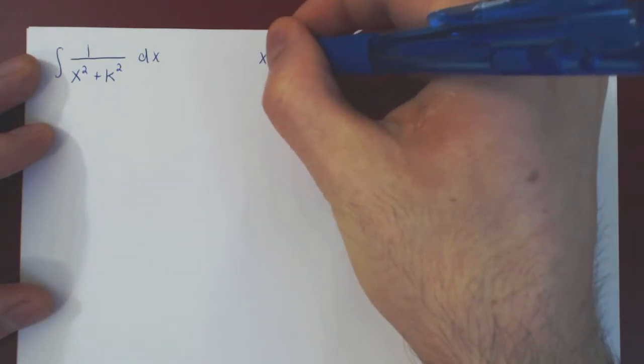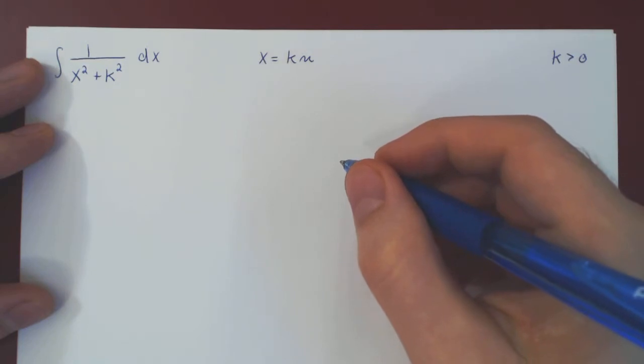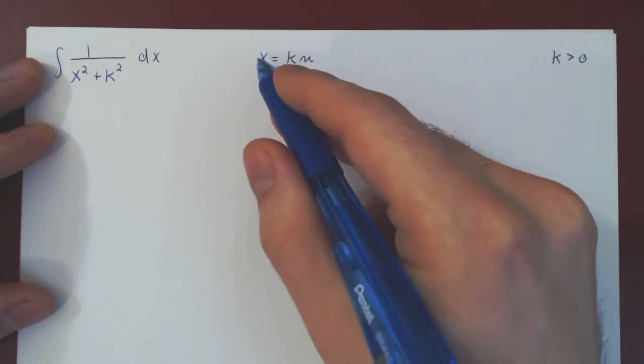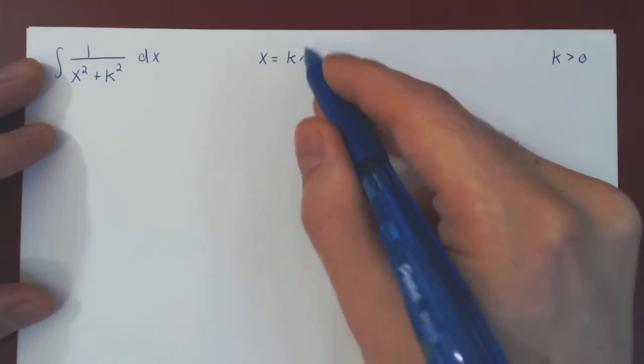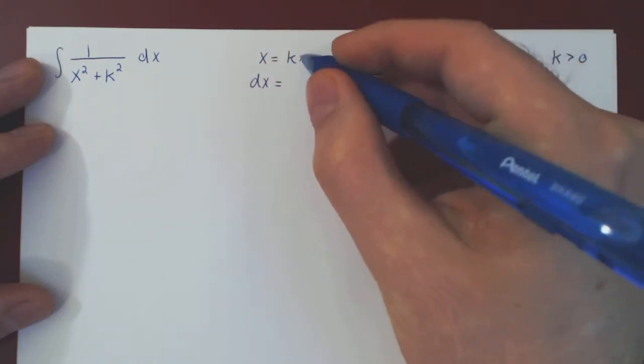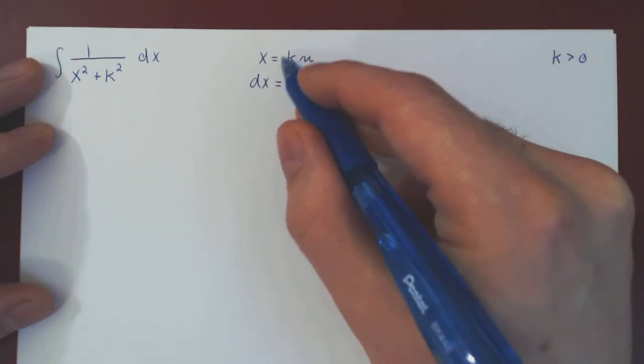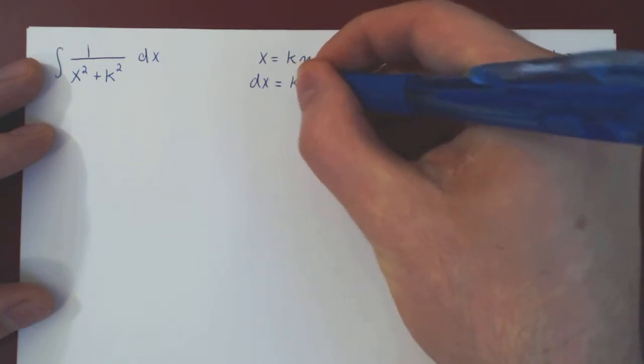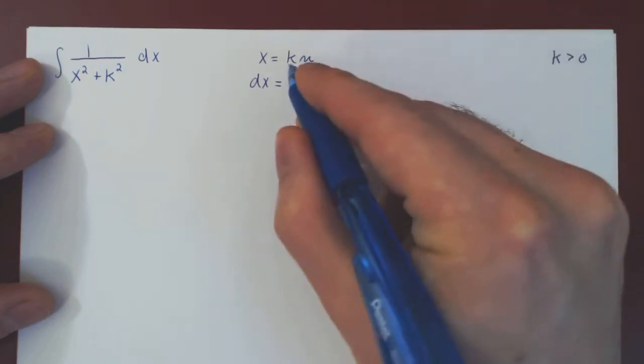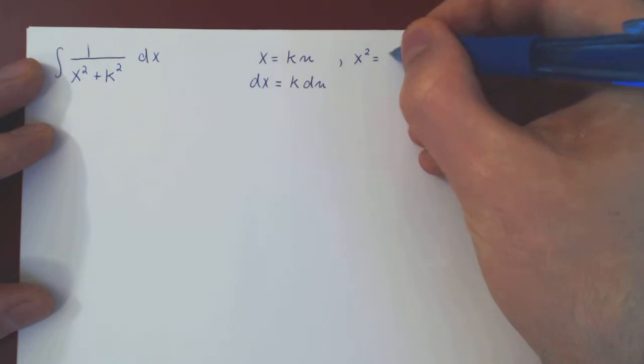So we replace x by k times u. Let's find our differential. So the differential of x will be the differential of ku. But the differential of k times u, well, the derivative of k times u is simply k times du, of course, as we have a function of u. And of course, as we've said, if we square x, we get k squared times u squared.